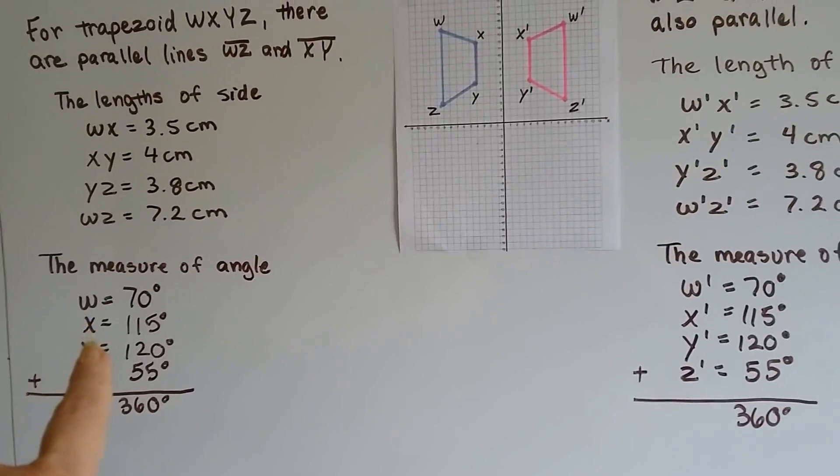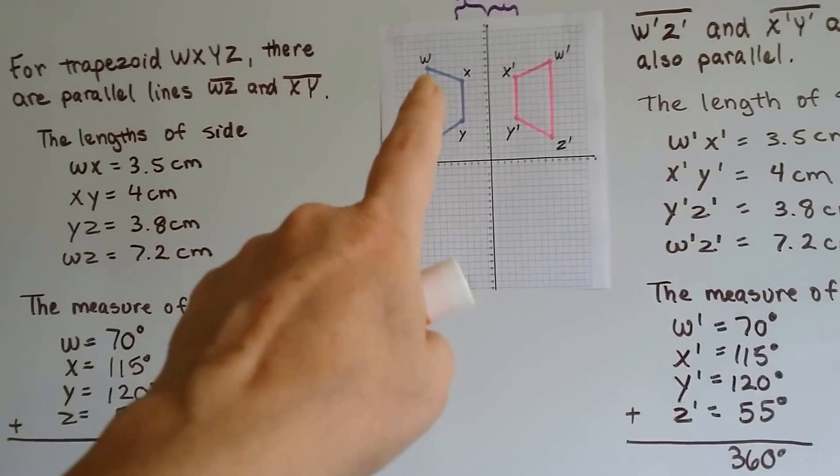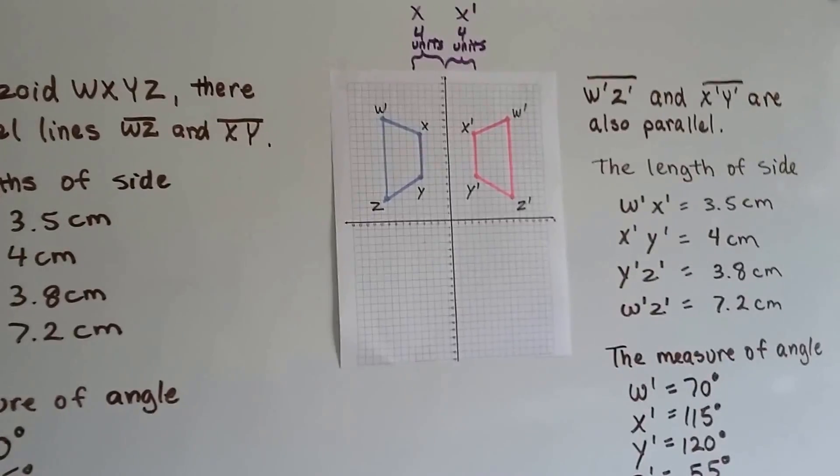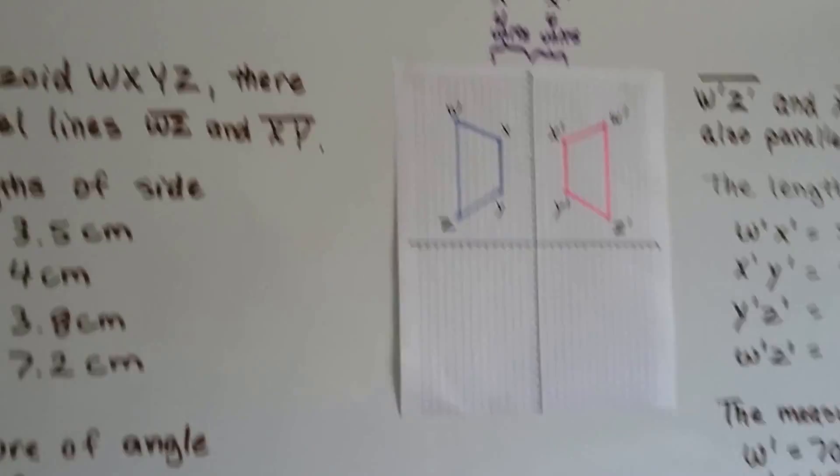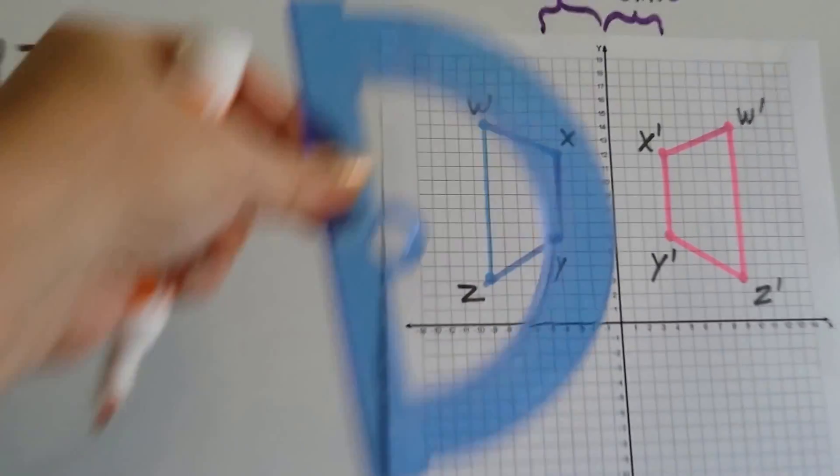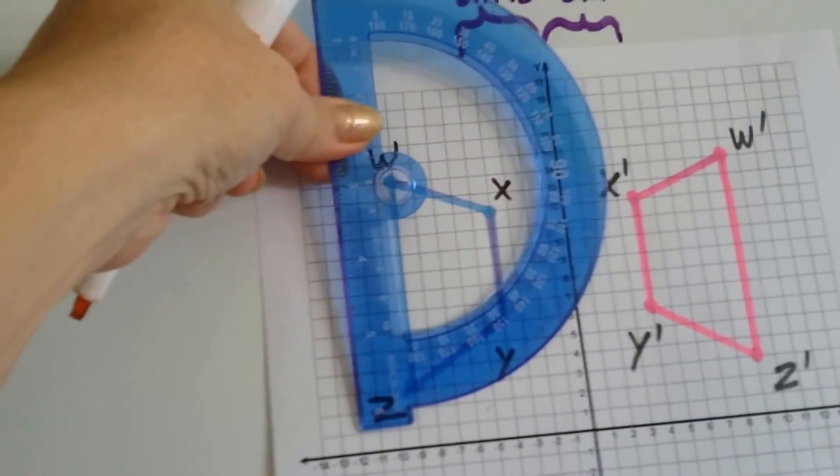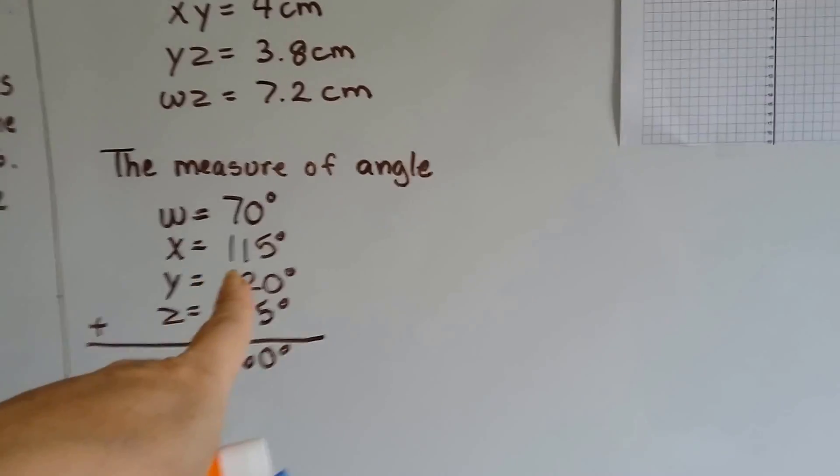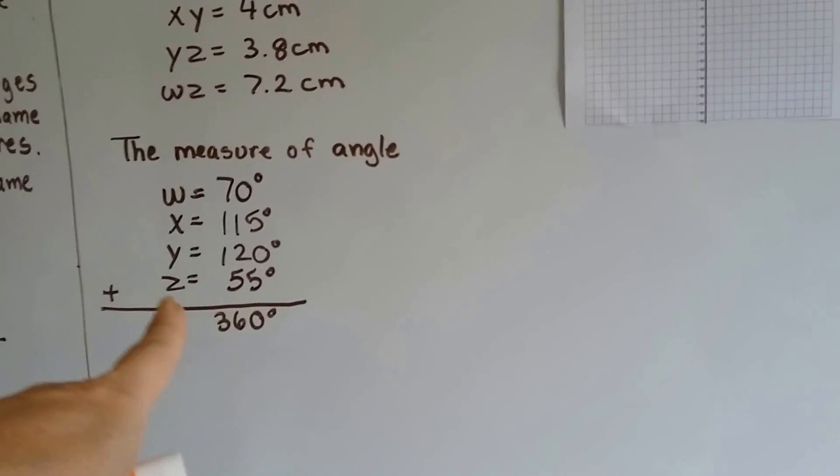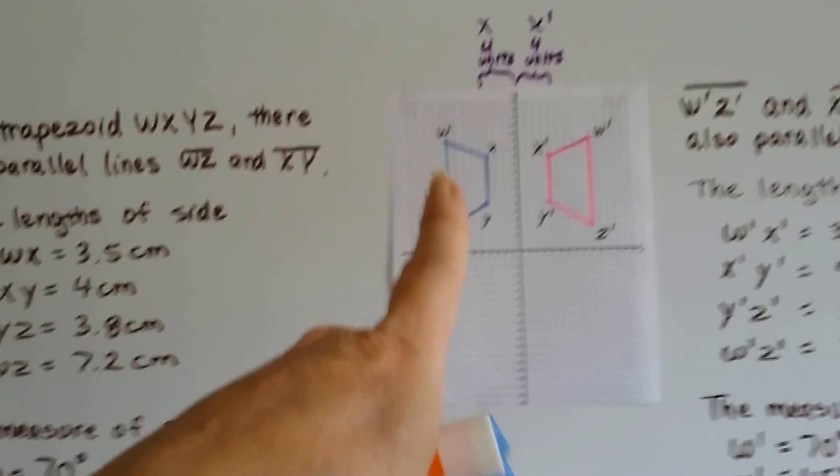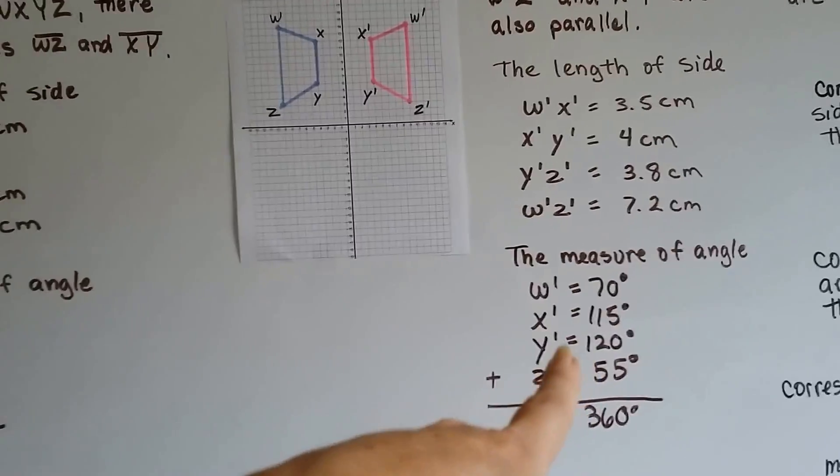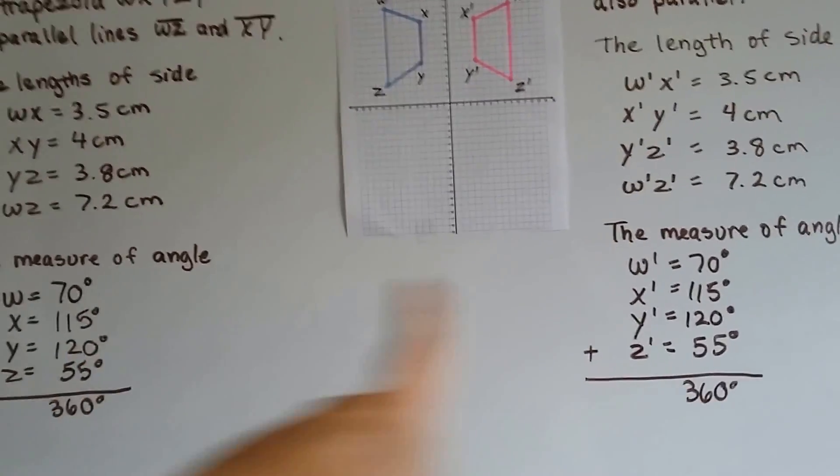When we measured the angles for W, it was 70 degrees. When I took my protractor and I measured it, it came out to 70 degrees. And X was 115, Y was 120, and Z was 55. And when I measured the reflection, they were 70, 115, 120, and 55. They were the same.